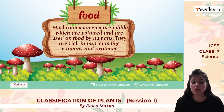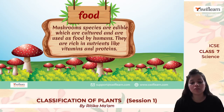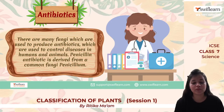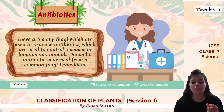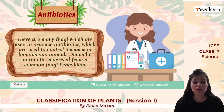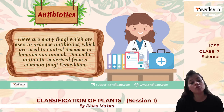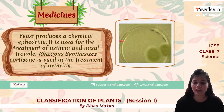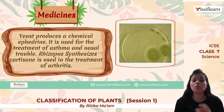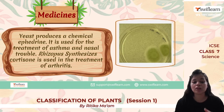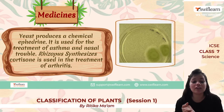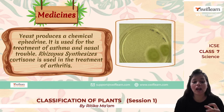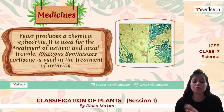Talking about antibiotics, penicillin is actually derived from a fungi called Penicillium. These fungi are used to produce antibiotics that control diseases, making them very helpful to humans and animals. In the medicine field, yeast produces a chemical known as ephedrine, which is very useful for treatment of asthma and nasal trouble. Another fungi, Rhizopus, is used in synthesis of cortisone, which helps in treatment of arthritis.